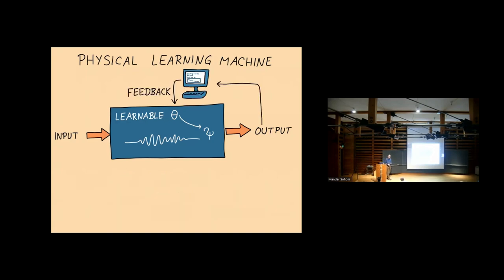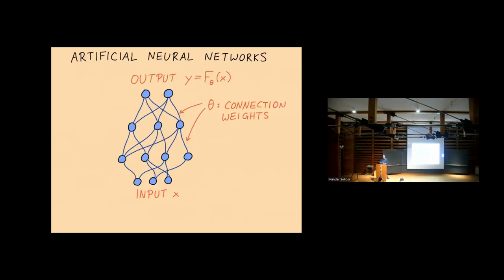There is one technique that in principle always works, and this is simply to send an input for some given training samples, look at the output that results. Then if the output is not quite what you wanted, change the trainable parameters in a small way and see whether the output comes closer to what you really wanted to have. This will work always, but it has a big catch. If you have a million different trainable parameters, you need to run the device a million times in order to get closer to what you want to have.